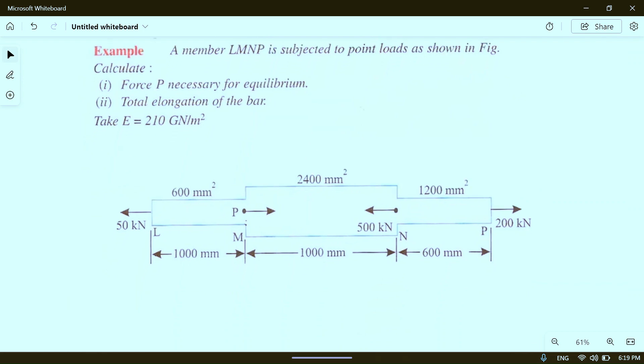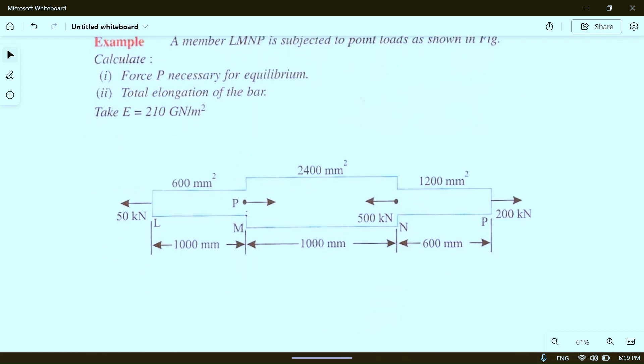To calculate force P, we can maintain equilibrium in the x direction. Sum of all forces in x direction should be zero. So 50 is plus, minus P, plus 500 in left direction, minus 200 in opposite direction equals zero. So 550 minus 200 minus P equals zero, therefore P equals 350 kilonewtons. We have already solved the first part.